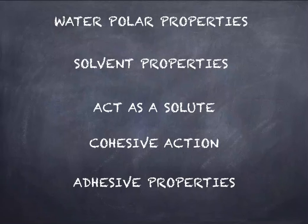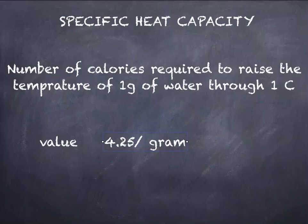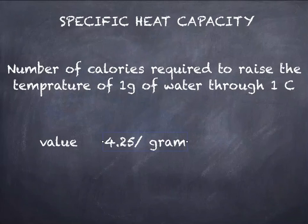The next property is specific heat capacity. It is defined as the number of calories required to raise the temperature of one gram of water by one degree centigrade. The temperature range used is 15 to 16 degrees centigrade, and the specific heat capacity value is one calorie per gram, which converts to 4.2 joules per gram. Due to this high specific heat capacity, water acts as a temperature stabilizer for our body, protecting us from extreme hot and cold temperatures.